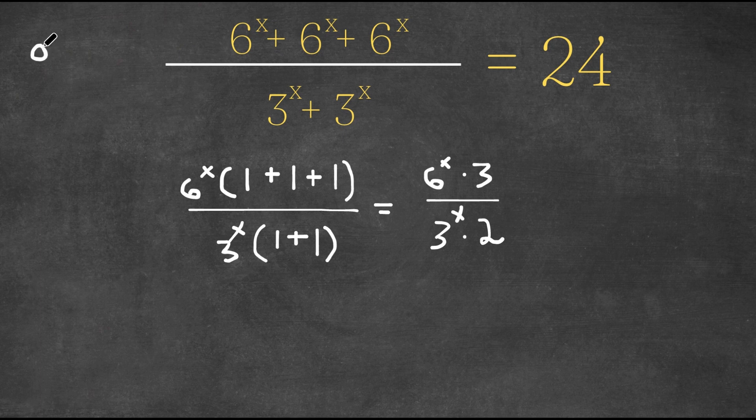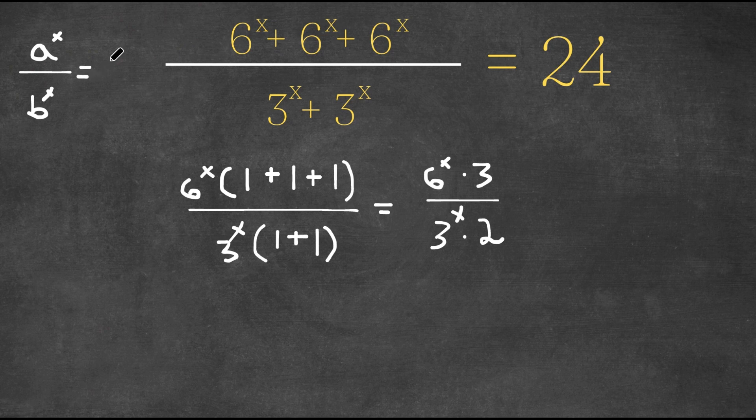Now if we have something in the form a to the power of x over b to the power of x, this is actually also equal to a over b to the power of x.